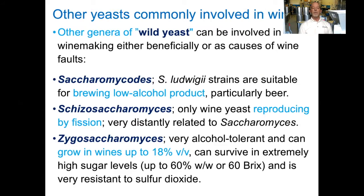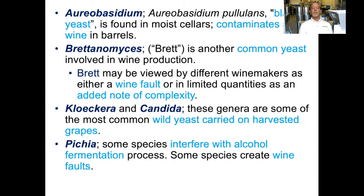Other genera of wild yeast can be involved in wine making, either beneficially or as causes of wine faults. Saccharomyces is one group; the S. luigi strains are suitable for brewing low alcohol products such as beer. Schizosaccharomyces is the only wine yeast reproducing by fission and is very distantly related to Saccharomyces. Zygosaccharomyces are very alcohol tolerant, can grow in wines up to 18%, survive in extremely high sugar levels up to 60 brix, and is very resistant to sulfur dioxide. Aureobasidium is known as the black yeast, found in moist wine cellars and can contaminate aging wines in barrels. Brettanomyces is another important yeast, commonly known as brett.